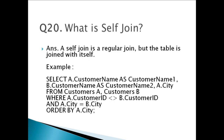Question twenty: What is a self join? A self join is a regular join, but the table is joined with itself. I have given an example — the SQL statement matches customers that are from the same city.